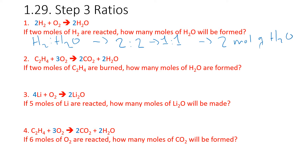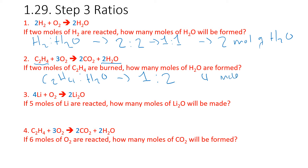Second question: C2H4 plus 3O2 goes to 2CO2 plus 2H2O. If 2 moles of C2H4 are burned, how many moles of H2O are formed? We're looking at C2H4 to H2O. There's no big number in front of C2H4, which means it's a 1, and H2O has a 2, so the ratio is 1 to 2. Here's where people screw up: you have 2 moles of C2H4, and since the ratio is 1 to 2, 2 moles of C2H4 makes 4 moles of H2O.